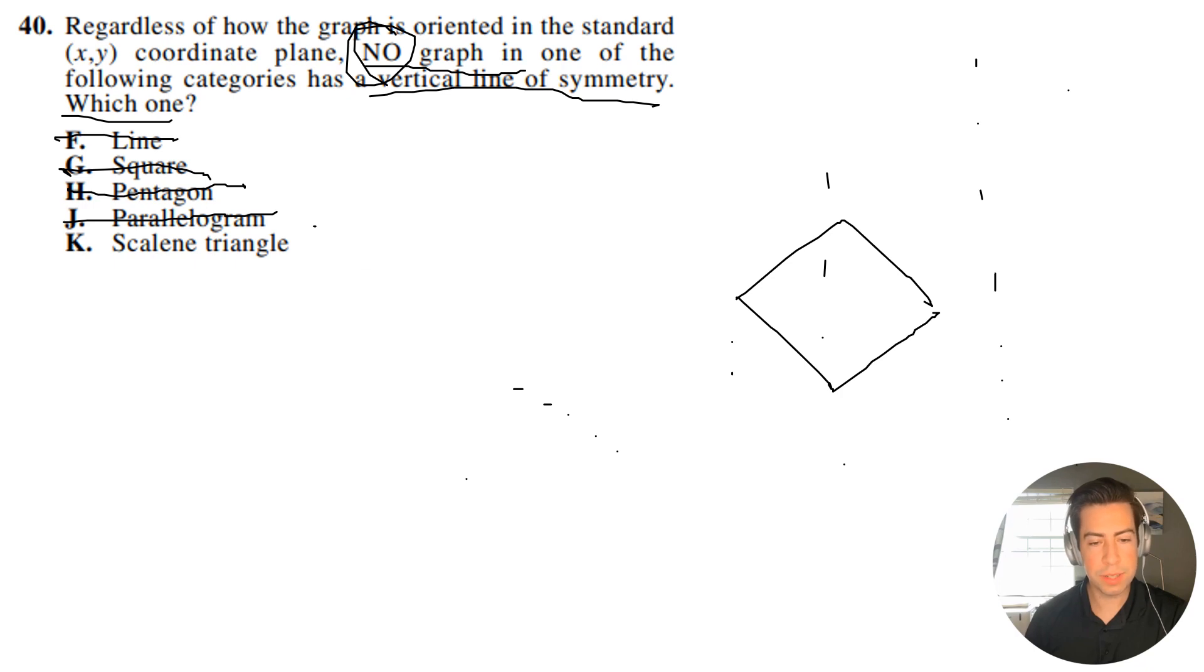So the last one here is a scalene triangle, and if you guys remember with a scalene triangle, all the sides are different lengths. So it would look something like this, basically. This would be a good example of a scalene triangle.